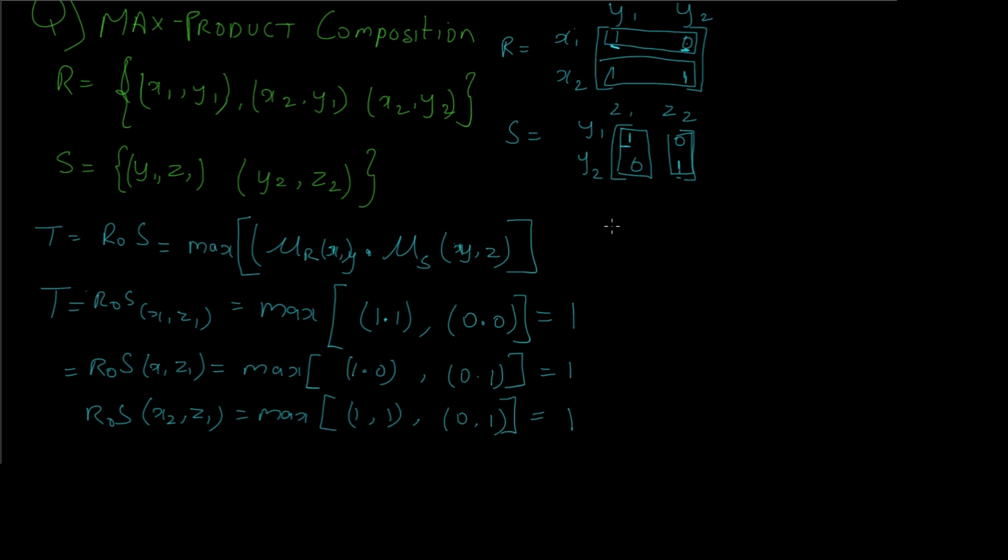And for the last element of the composition, that is R∘S of (x₂,z₂), it would be given as max of 1·0, 0·1. Now we have to take the last row and last column of both the relations.